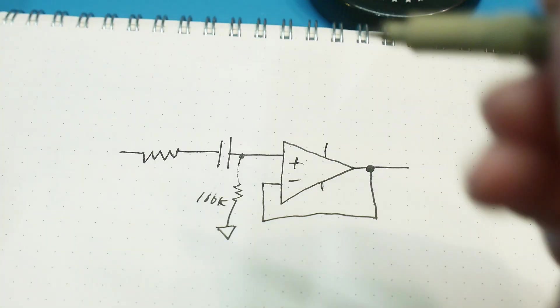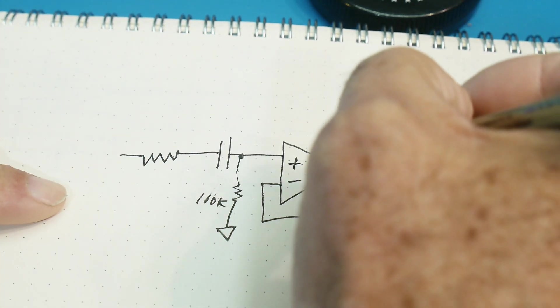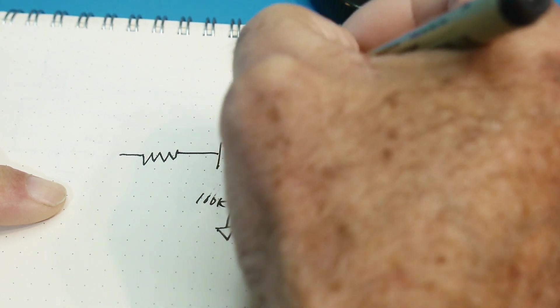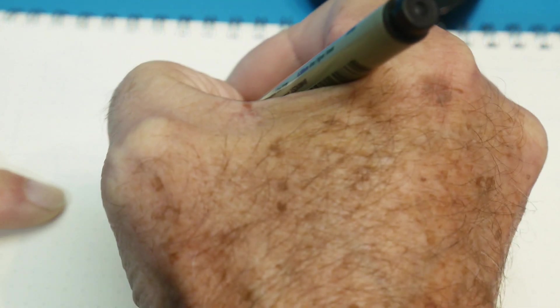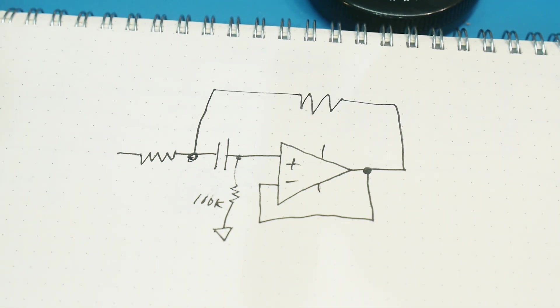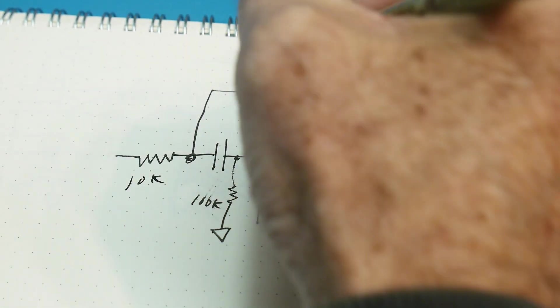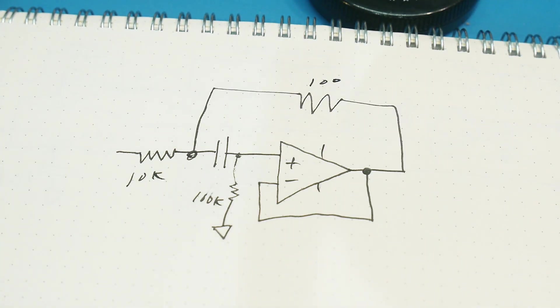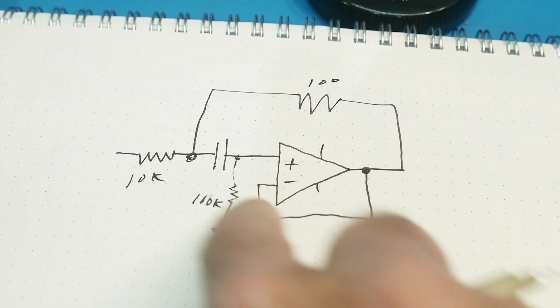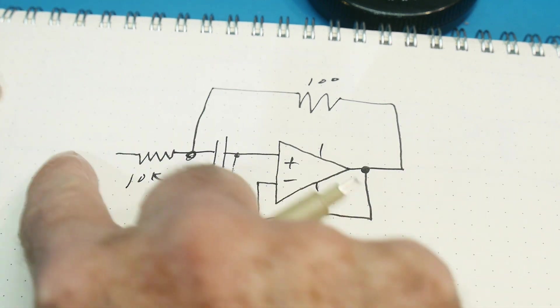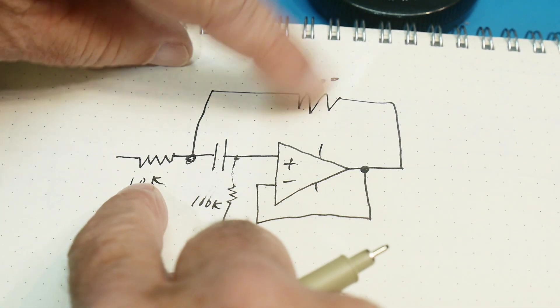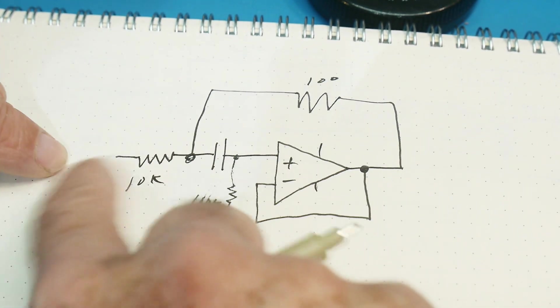But if we take the output and we feed it back to the input, that's the gyrator. So this is something like 10k and this is something like a hundred ohms. And so we're adding back in a whole lot more than we started out with. This is a heavier weight in this one. More current here, less current here.